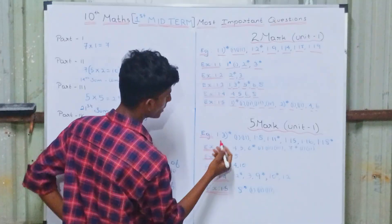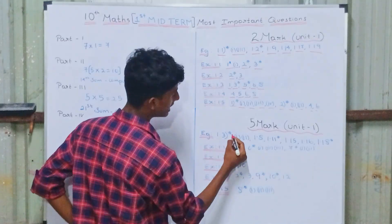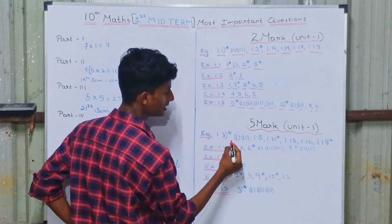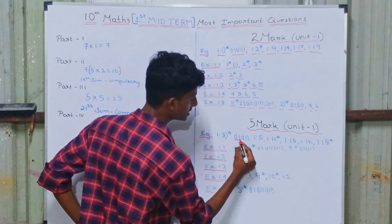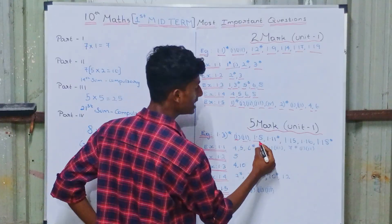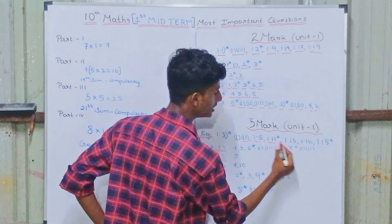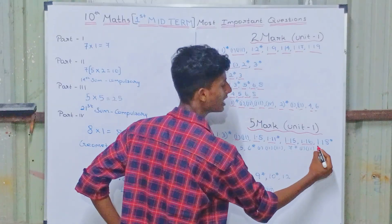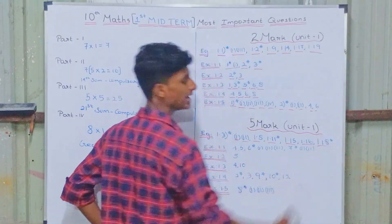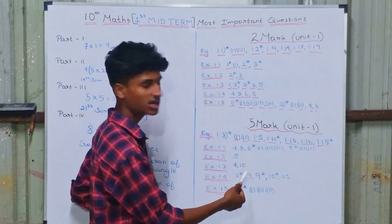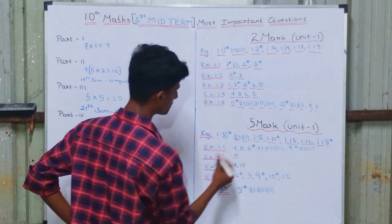Important five-mark examples: 1.3 — 1st and 2nd subdivision. 1.8, 1.11, 1.15 and 1.16, and lastly 1.18. In the examples, there are not a lot of important five-mark questions. You can check the numbers.